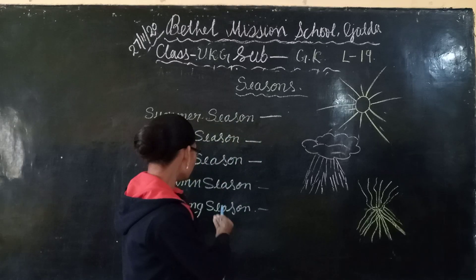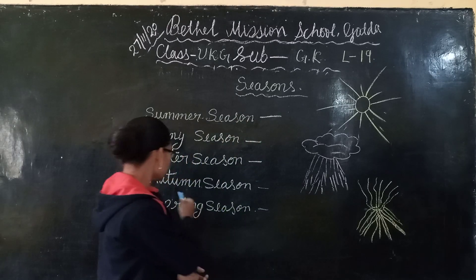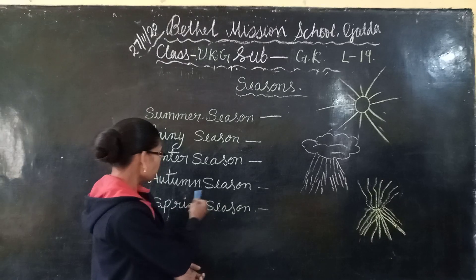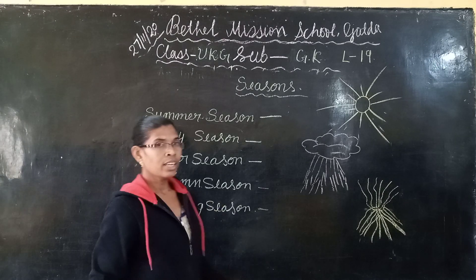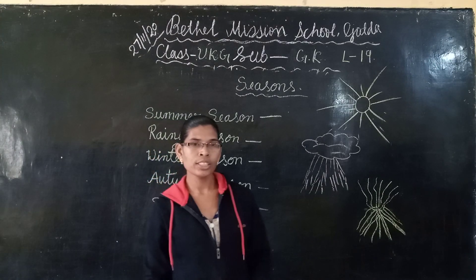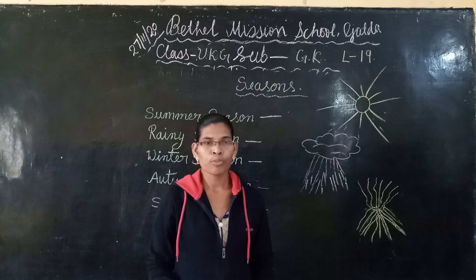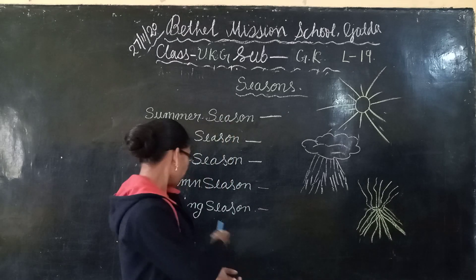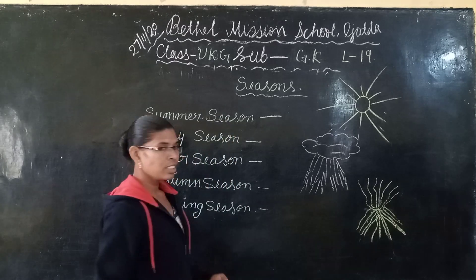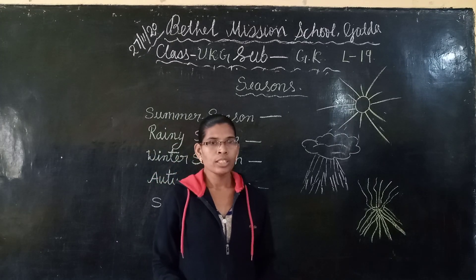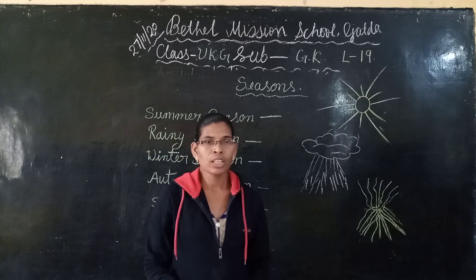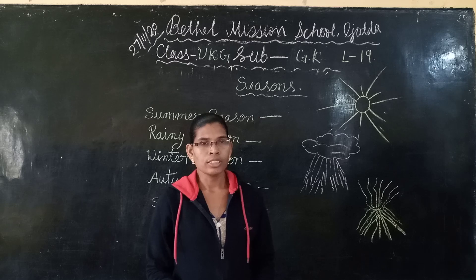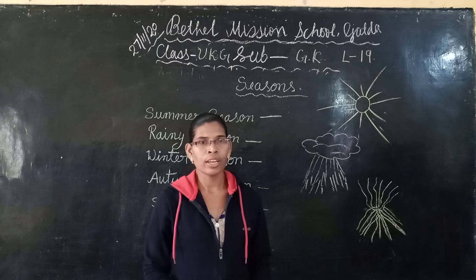The remaining two seasons are autumn and spring. In autumn season all the leaves fall from the trees. In spring season we see greenery all around us, everywhere.